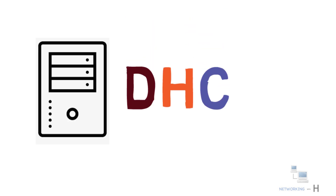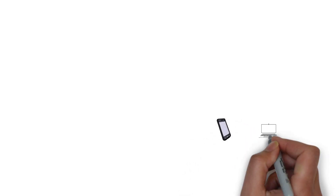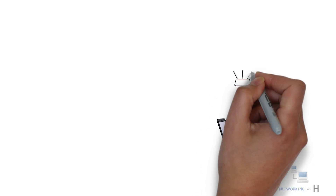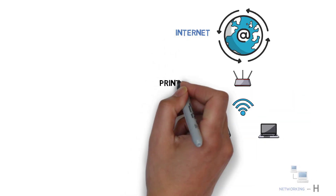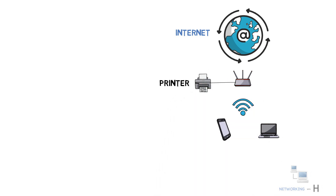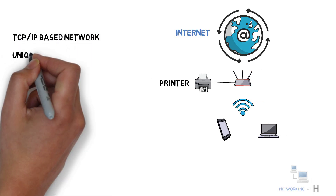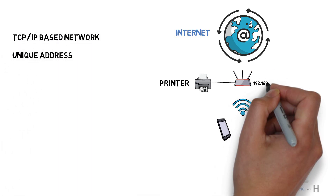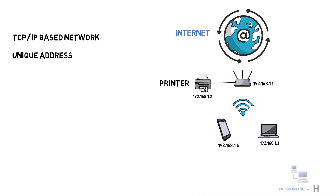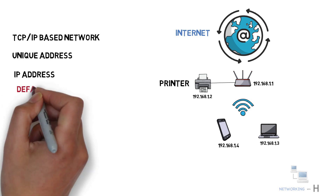In this video I'm going to discuss DHCP, also known as Dynamic Host Configuration Protocol. We all use mobile phones, laptops, or PCs at home or at offices to access network resources such as internet or printer. To access the network and its resources, every device on a TCP/IP based network must have a unique unicast IP address, along with a default gateway and the IP address of DNS servers.